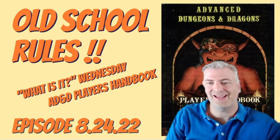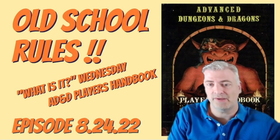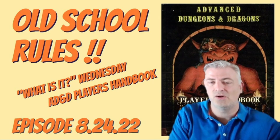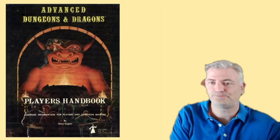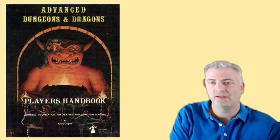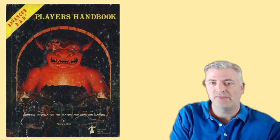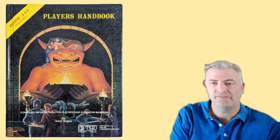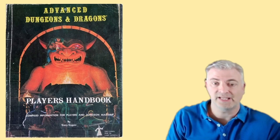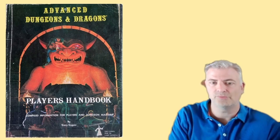Today we're looking at the AD&D Player's Handbook. Unlike the Monster Manual, this one is pretty straightforward and simple to identify once we know exactly where to look. The cover stays the same for the first three printings, then we move to a second cover design, and finally to a third cover. There's also a soft cover edition from the UK from Games Workshop.